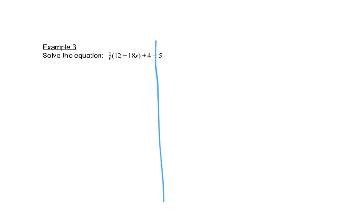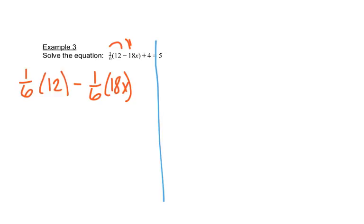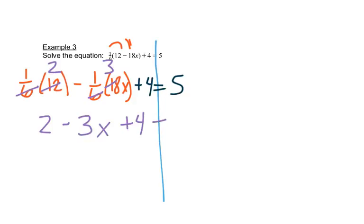In this problem we'll start by drawing our line straight down. This time we need to get rid of the parentheses, so we're going to take 1/6 times both of those: 1/6 times 12, minus 1/6 times 18x. We still have a plus 4 and an equals 5. So 1/6 times 12 — that's 6 going into 12, 2 times. And 6 going into 18, 3 times. So I have 2 minus 3x, plus 4 equals 5. Combining like terms: 2 plus 4 gives 6 minus 3x equals 5.